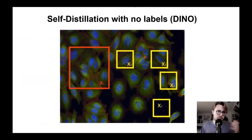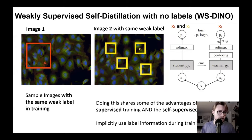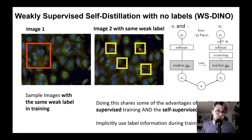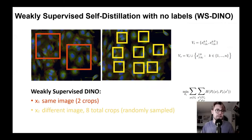Here's an example of us using DINO on the cell data. We thought: how can we adapt this to incorporate weak label information that has been shown to enhance the features we could learn? We came up with Weakly Supervised DINO, or WSDino. We take the global crops from one image and the local crops from a different image of the same weak label class — that could be same treatment, same compound, or even same batch. We wanted to retain the benefits of powerful self-supervised learning while also implicitly incorporating these labels.